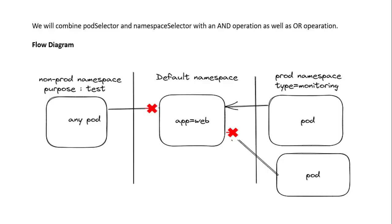In this networking policy recipe, I am going to combine the pod selector as well as the namespace selector using AND operations. In this flow diagram, I am creating different types of namespaces. Namespaces are designed to isolate environments from each other. In the default namespace I am going to deploy an Nginx application and enable the label app equal to web. In another namespace I am going to deploy a pod and assign the label type equal to monitor. That particular pod will be able to communicate with the default namespace because I am allowing both the pod selector and namespace selector.